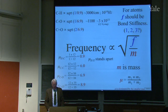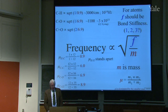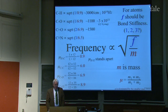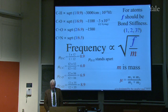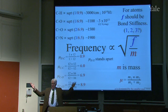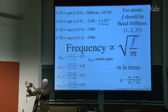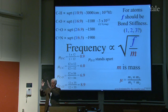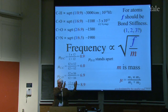A C=O double bond, if a double bond has twice the force constant of a single bond, gives √(2/6.9) which is about 1500 cm⁻¹. And a C≡O triple bond, with force constant 3, gives about 1900 cm⁻¹. So in a spectrum with 3000 on the left and 1000 toward the right, you'll see C–H stretches at about 3000, then triple bonds, double bonds, and single bonds involving heavier atoms all below.